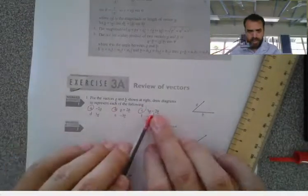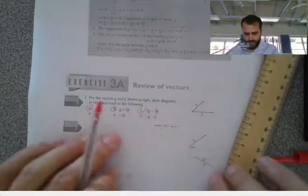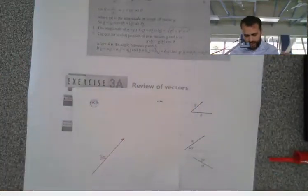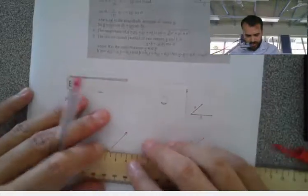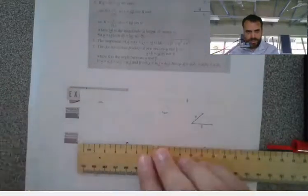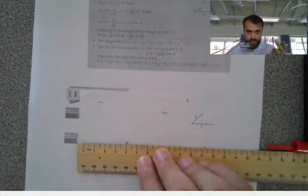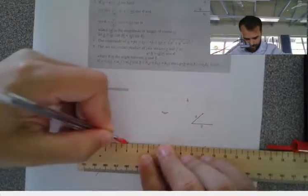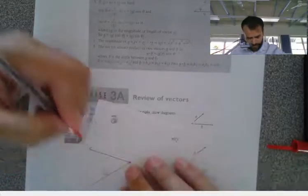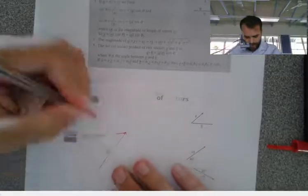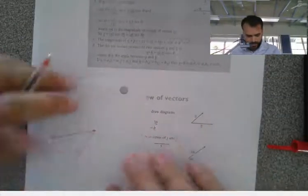And then it says minus 2B. So what we need to do is do tip to tail again. B was 2 centimeters. This time it's 4 centimeters. And because it's negative, it's going in the other direction. All right, so that's negative 2B.